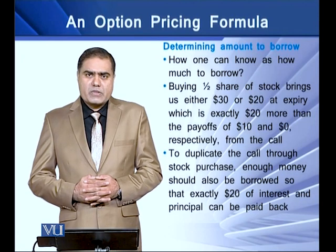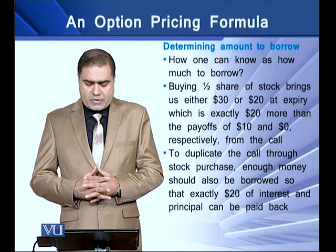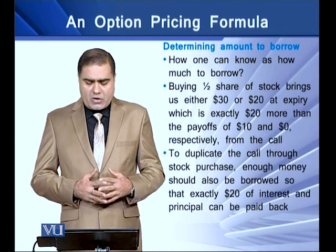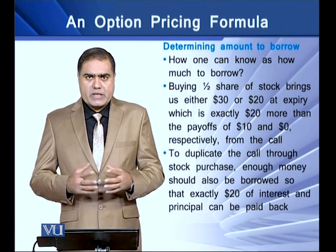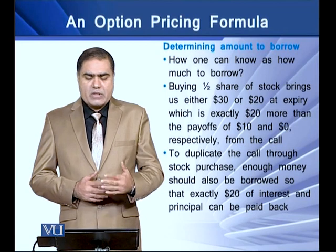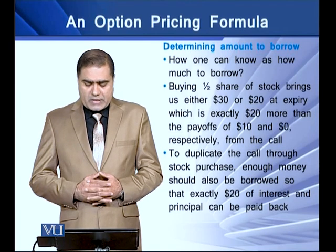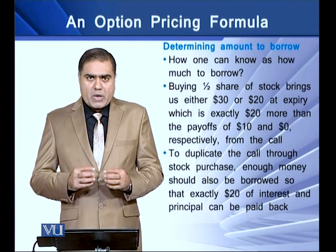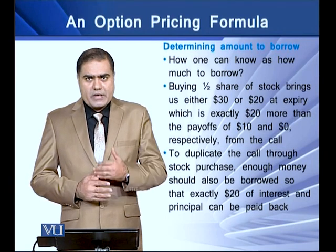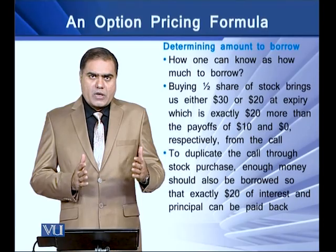The second issue is how to determine the amount to borrow, which is $20 in our example. Buying one-half share of the stock gives us $30 or $20 at the expiry date, which is exactly $20 more than the payoff of $10 or $0. This means that to duplicate the call through the stock purchase, enough must be borrowed so that we can pay off the principal and the interest, and in our example we need to borrow $20 to pay off our debt.